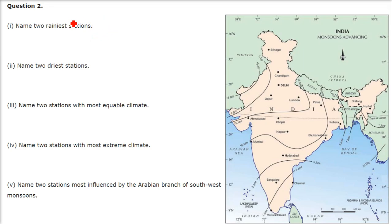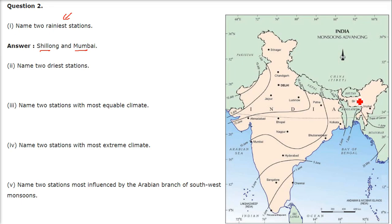Name two rainiest stations — means the places where it rains the most. The answer is Shillong and Mumbai.